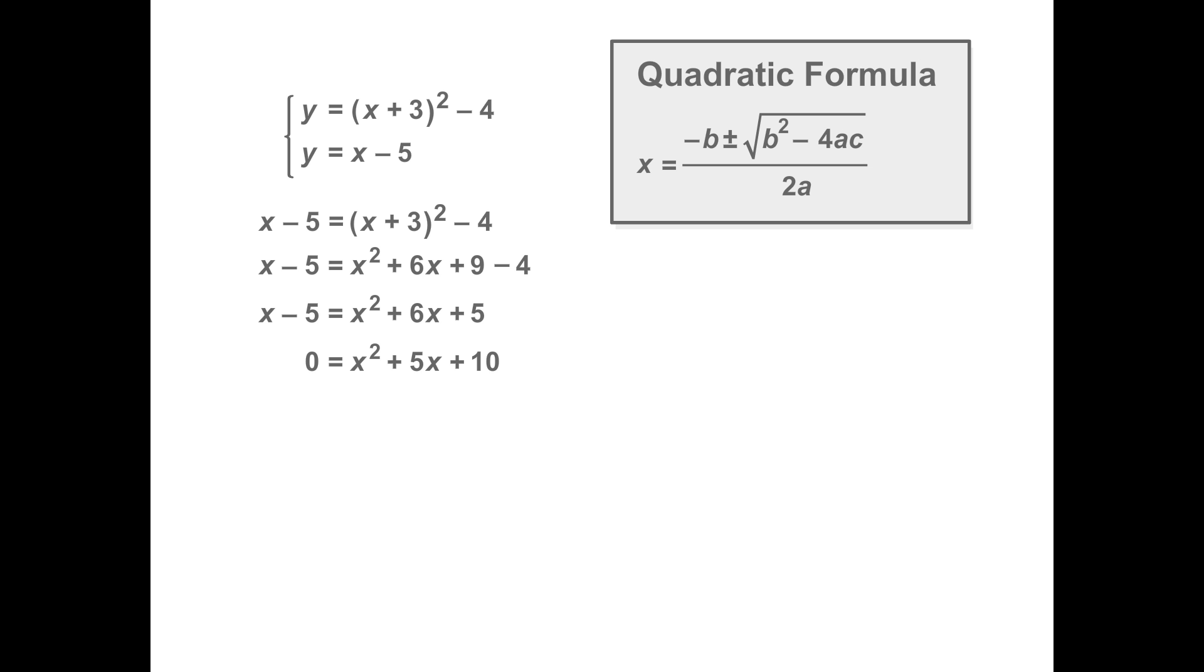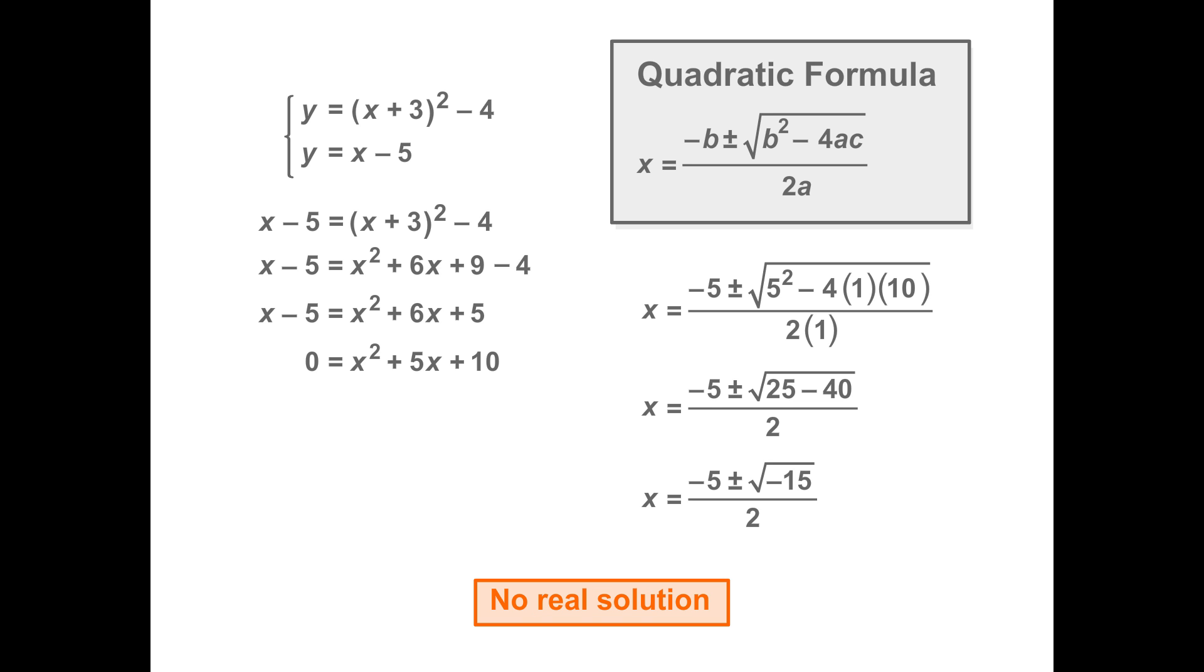Use substitution again. x squared plus 5x plus 10 equals 0 cannot be solved by factoring. So, use the quadratic formula. There is no real solution for x. Therefore, there is no solution for the system.